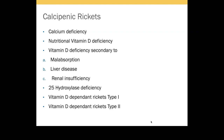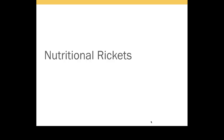There are two other genetic types of calcipenic rickets. Vitamin D dependent rickets type 1, where the 1-alpha hydroxylation step is defective so the patient does not make active vitamin D metabolites — calcium absorption is impaired and they develop calcipenic rickets. Vitamin D dependent rickets type 2 is where, even though active vitamin D is formed, there is end-organ resistance, so they have high 1,25-hydroxyvitamin D levels but remain calcipenic. Out of all these types, nutritional rickets is the most common and must be identified and treated appropriately.